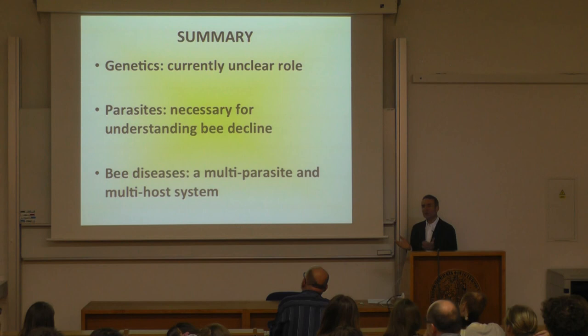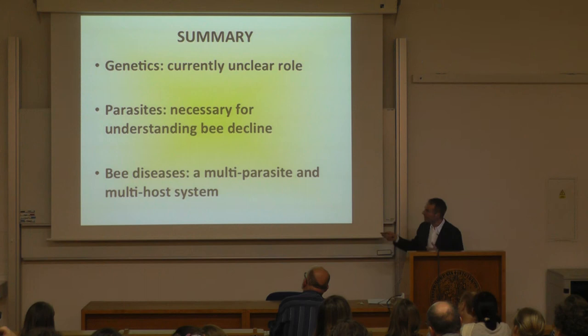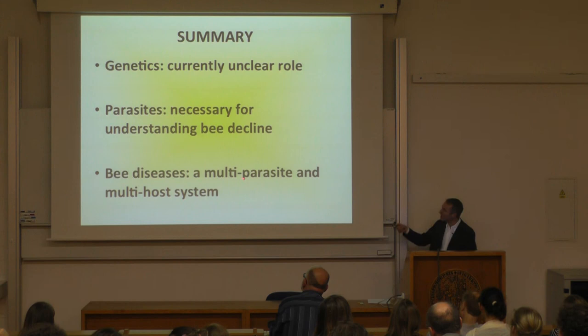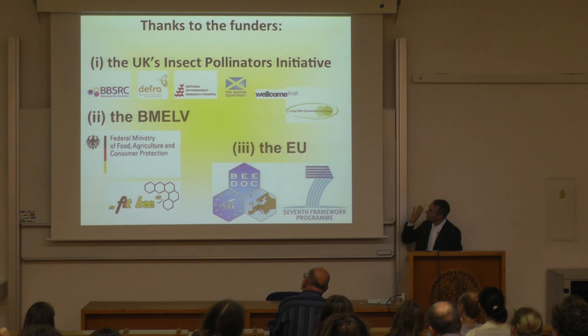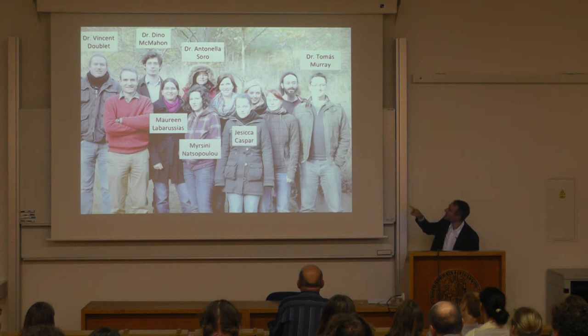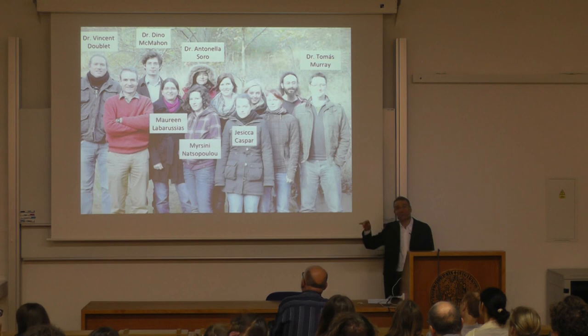In summary: genetics — its role in bee decline is currently unclear. Parasites — understanding them is necessary for understanding bee decline, certainly of honeybees and maybe of other bees. Importantly, when we think about diseases in bees or insects visiting flowers, we're actually dealing with a multi-parasite, multi-host system. Thank you to funders — EU, UK government, and German government money — and to team members Tom, Jessica, Mersini, Maureen, Antonella, Dino, Vincent, Sam, and other colleagues outside of Halle. Thank you for your attention.